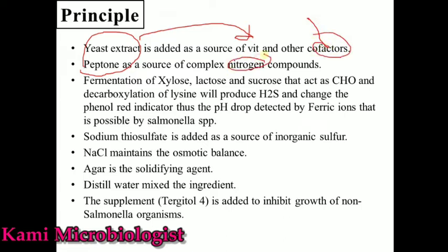Then we have xylose, lactose, and sucrose, which are the carbohydrates. The fermentation of these carbohydrates, as well as the decarboxylation of lysine — when the carbon atom is removed — produces H2S. This will change the phenol red indicator, causing the pH to drop, which can be detected by the ferric ammonium citrate indicator. All these characteristics are specific to Salmonella species.